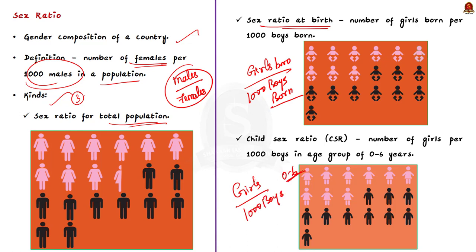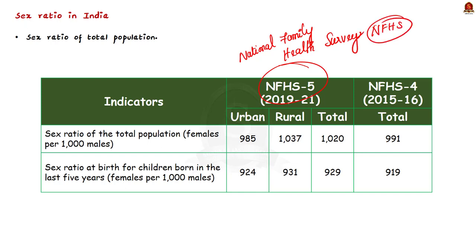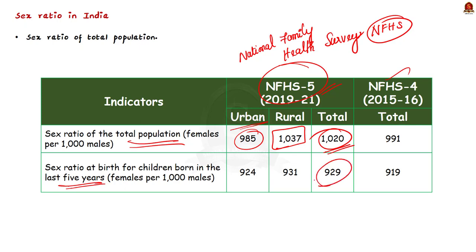Now let us know what is the current sex ratio in India. The data can be obtained from the National Family Health Survey 5, which was for the period 2019 to 2021, and we will compare it with NFHS-4 from 2015 to 2016 wherever possible. As per NFHS-5, the sex ratio of the total population for the country as a whole was estimated at 1020. For rural India it stood at 1037 and for urban at 985. The sex ratio at birth for children born in the last five years was 929 in NFHS-5 and 919 in NFHS-4, so overall sex ratio at birth has improved.